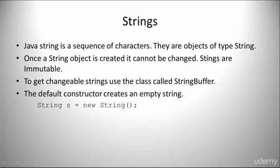When it comes to strings, a Java string is a sequence of characters. They are objects of type string. Once a string object is created, it cannot be changed — strings are immutable. To get changeable strings, we use the class called StringBuffer.